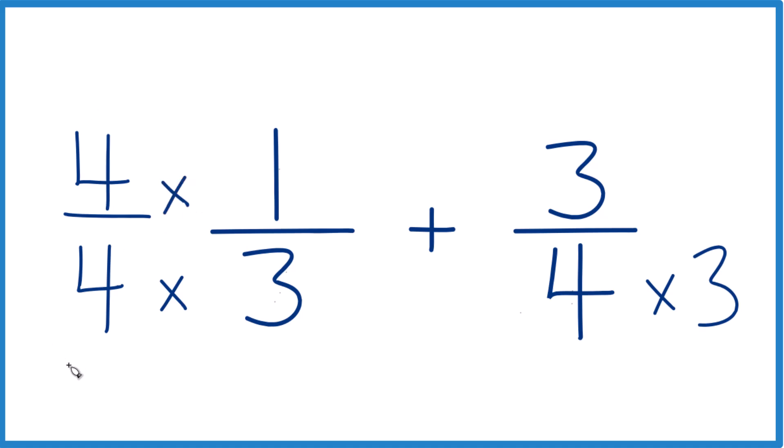That's because 4 over 4 is 1. 4 divided by 4 is 1. We're not changing the value, just the way it's represented.